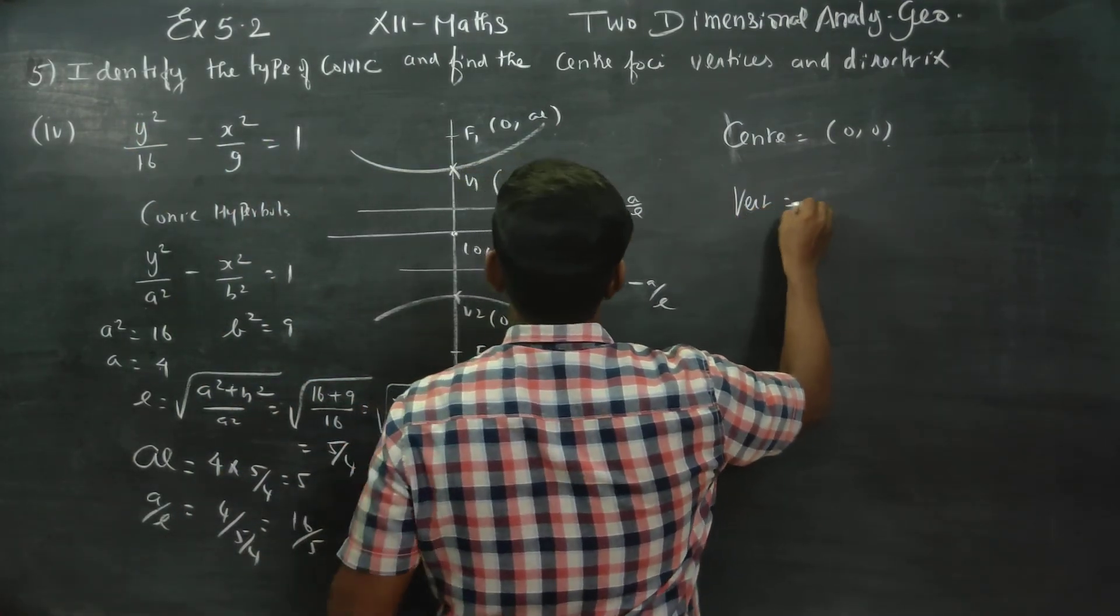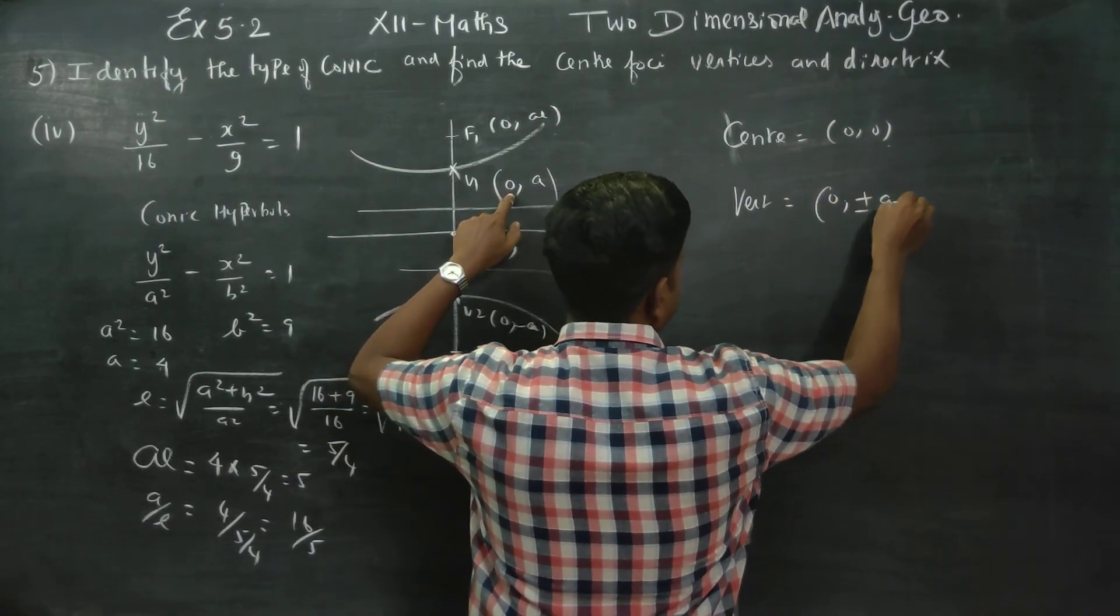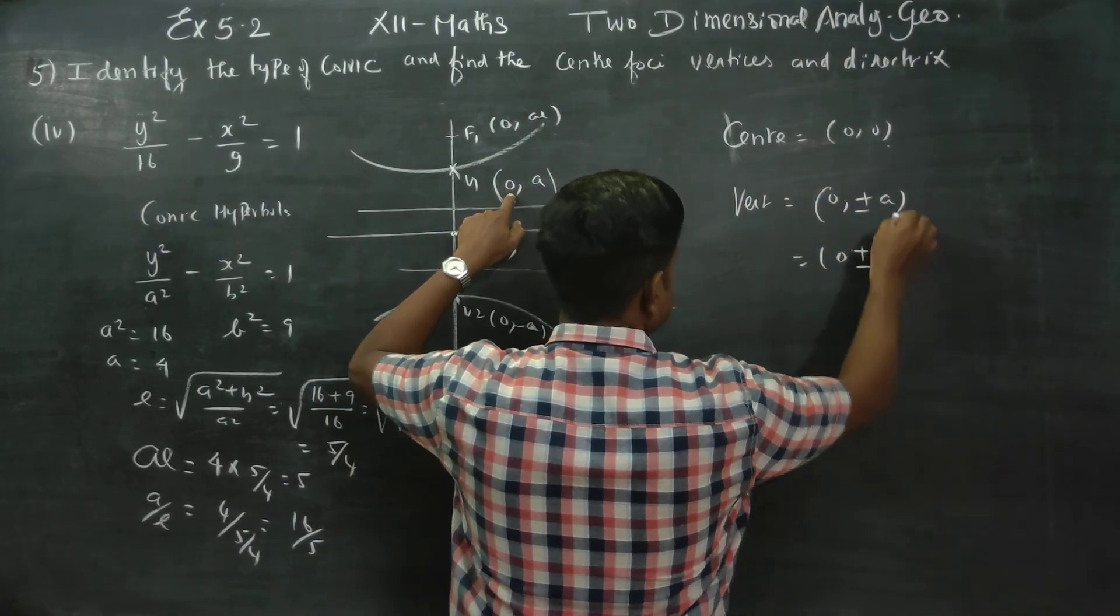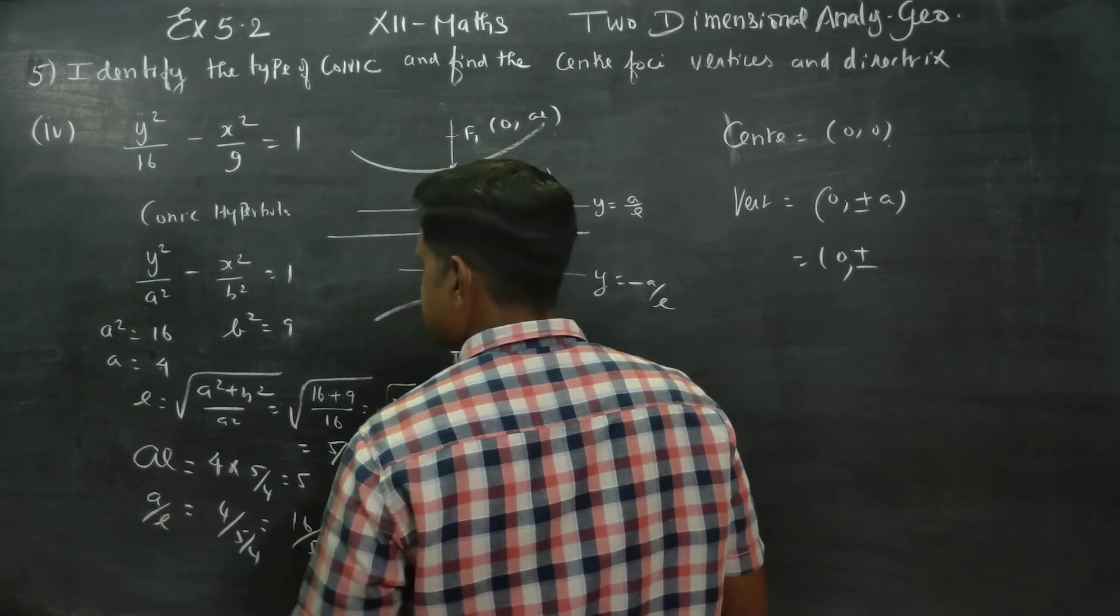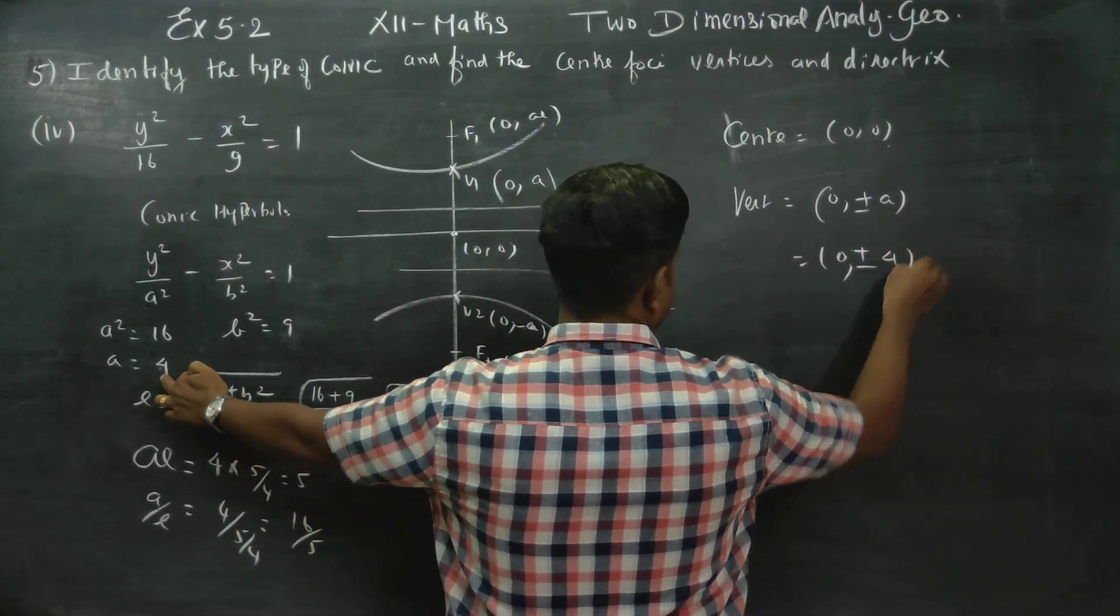Next is vertices. Vertices are 0, plus or minus a. 0, plus or minus a. A is 4, so vertices are 0, 4 and 0, minus 4.